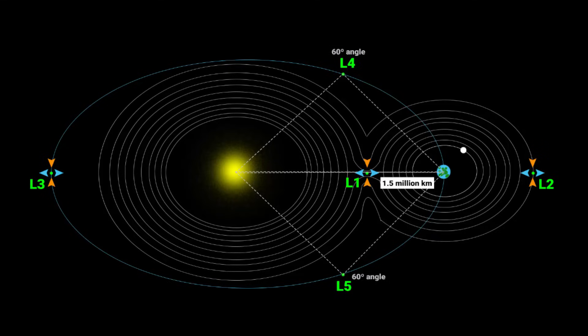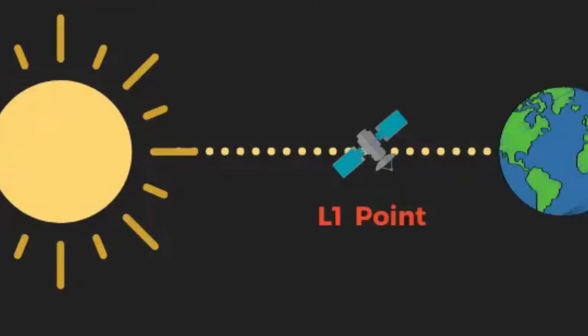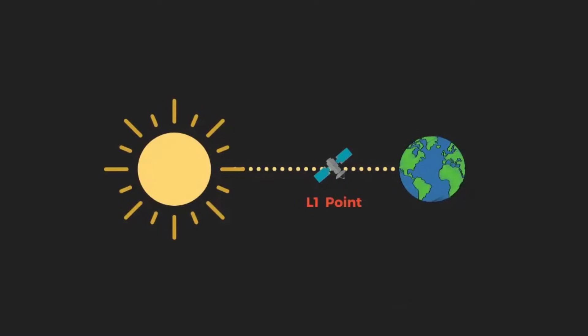If you pay attention, the approximate distance between Earth and the Sun is around 150 million kilometers. That means this Lagrange 1 point is merely 1% of the Earth-Sun distance. However, this point also provides a continuous view of the Sun without interference from Earth's atmosphere. That is the reason ISRO has chosen this point for India's first solar mission.